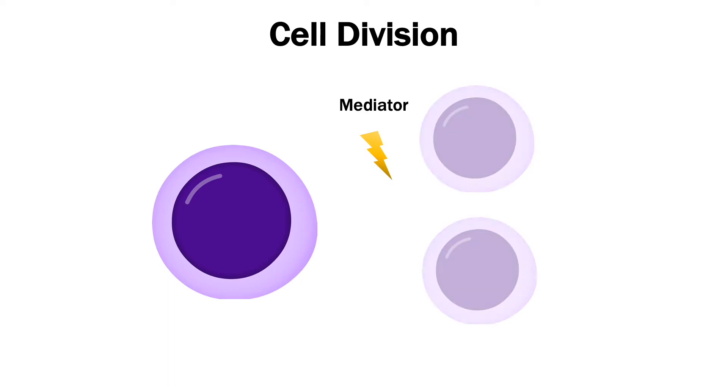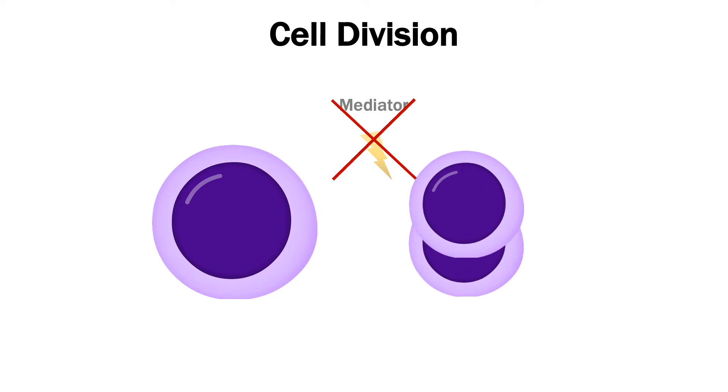Thus, there must be some sort of mediator or controlling factor present in cells as they undergo the cell cycle, right? Because without some sort of control, cells would have some difficulty proceeding through cell division. Well, as scientists have only recently discovered, this is actually true.